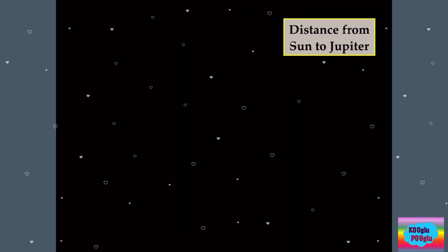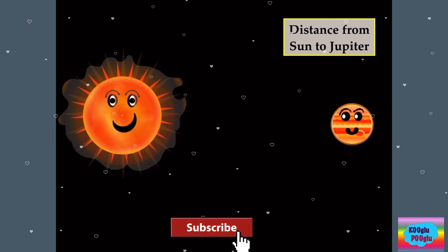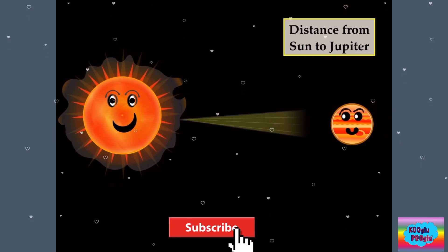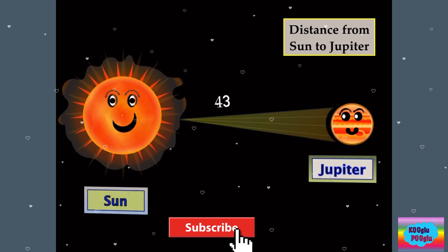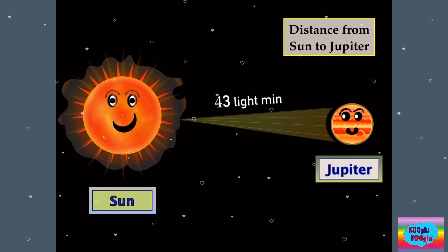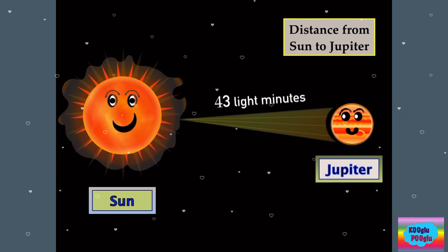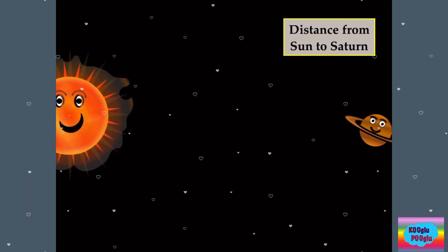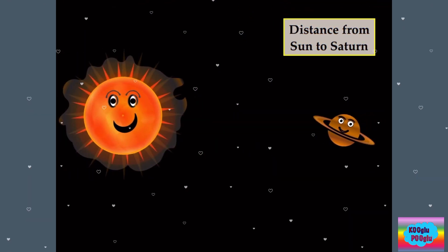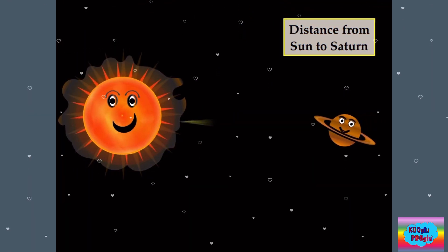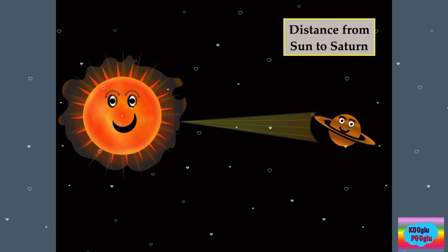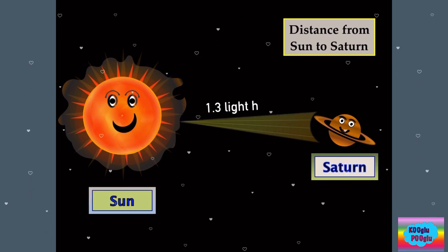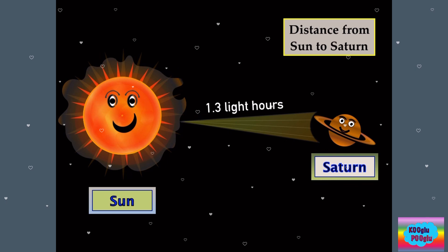Now we got our biggest planet, Jupiter, the gas giant too, is 43 light minutes away. Now we got the distance from the sun to Saturn, which is famous for its rings — that is 1.3 light hours.